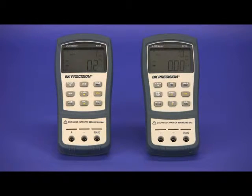Here are the models 878B and 879B. Both are dual display handheld LCR meters, capable of measuring multiple parameters of capacitors, inductors, and resistors.